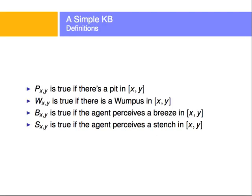Going back to the Wumpus world to illustrate a knowledge base: we define symbols — P(x,y) is true if there's a pit at (x,y); W(x,y) is true if there's a Wumpus at (x,y); B(x,y) is true if the agent perceives a breeze at (x,y); and S(x,y) is true if the agent perceives a stench at (x,y).